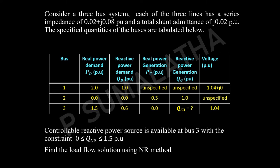Hello everyone. In this session I am going to explain a numerical on the Newton-Raphson (NR) method. Let us see the problem statement. Consider a three bus system where each of the three lines has a series impedance of 0.02 + j0.08 per unit and a total shunt admittance of j0.02 per unit. The specified quantities of the buses are tabulated below.